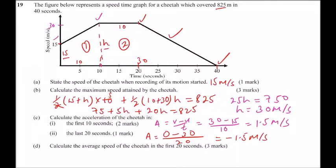Part D: calculate the average speed of the cheetah in the first 20 seconds. The first 20 seconds is up to that point on the graph. We divide this area into two parts to get the average speed. For the first trapezium, area equals one-half times (15 plus 30) — where 15 and 30 are the parallel sides, and the height is 10.